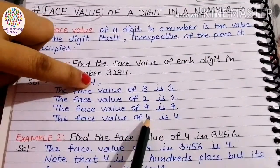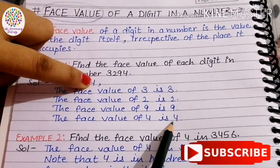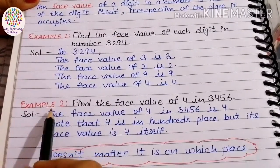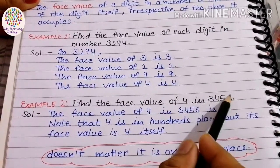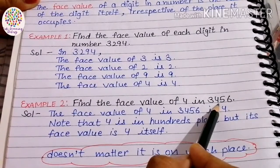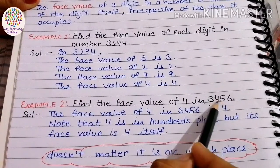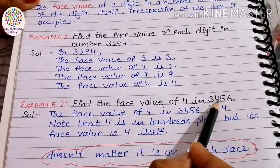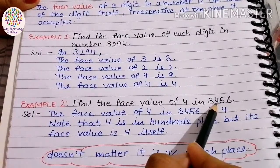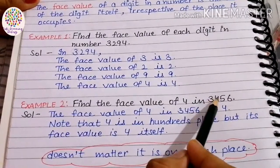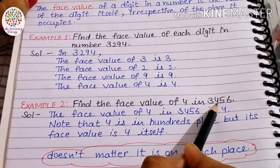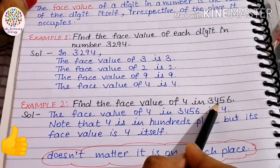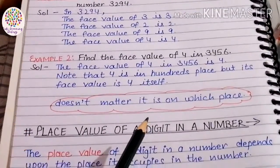The face value of 4 is 4 itself. Next question: find the face value of 4 in this number. The face value of 4 is 4 itself — it doesn't matter whether it is in the ones place, tens place, hundreds place, or thousands place. The face value of any digit in a number is the digit itself.